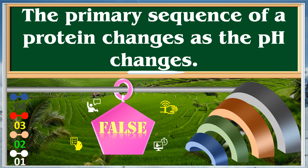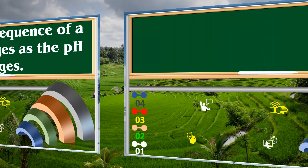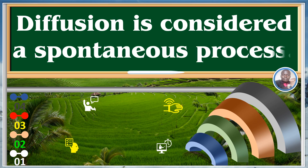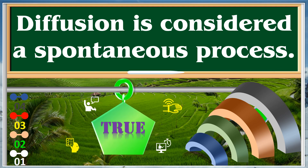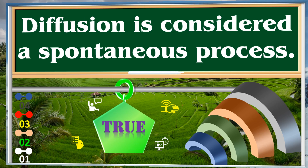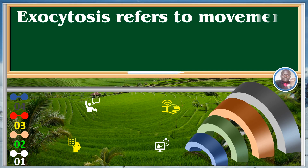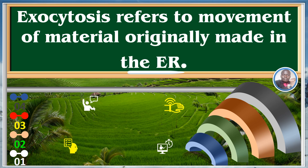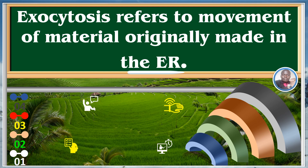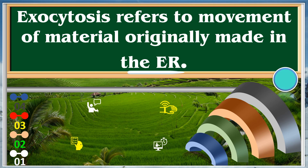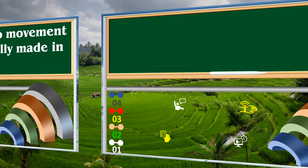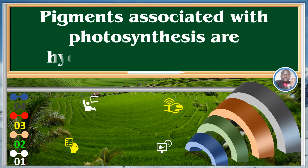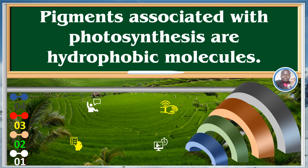Diffusion is considered a spontaneous process. False. Exocytosis refers to the movement of material originally made in the endoplasmic reticulum. True. Pigments associated with photosynthesis are hydrophobic molecules. True.